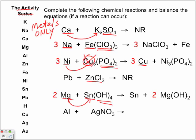Aluminum and silver(I) nitrate — we look for aluminum and silver in the activity series. Silver is way down at the bottom, so aluminum will have no problem displacing silver, leaving silver as a single element. Be very careful with the crossover rule here, remember your diatomics, and don't forget to balance the equation.